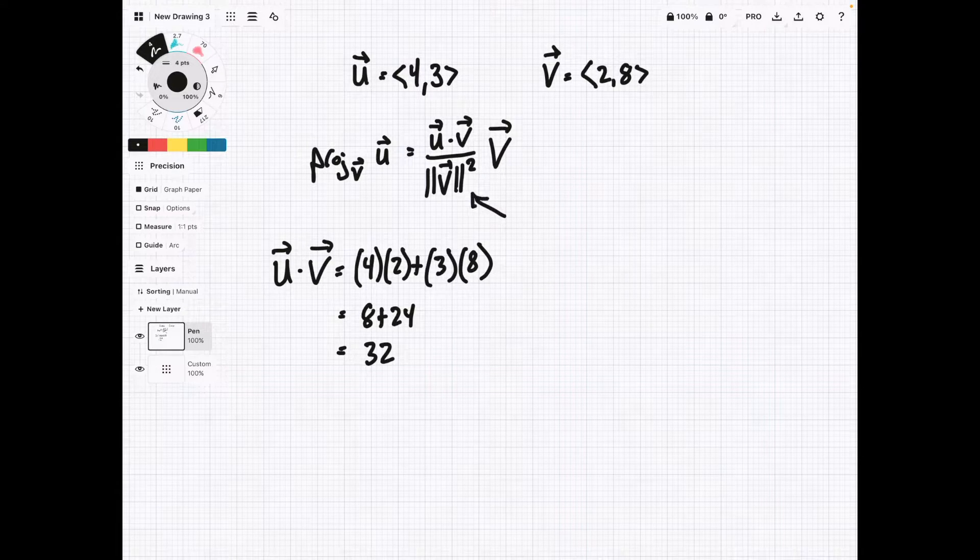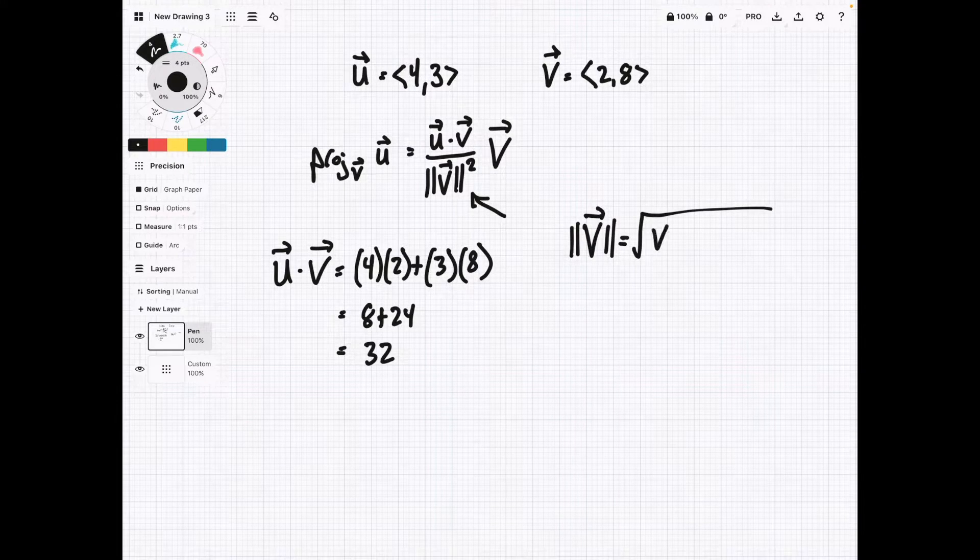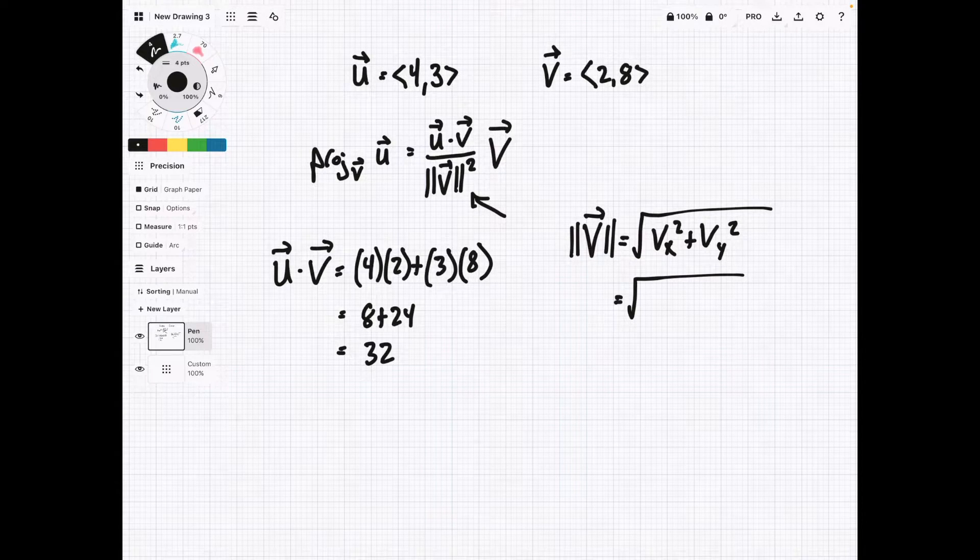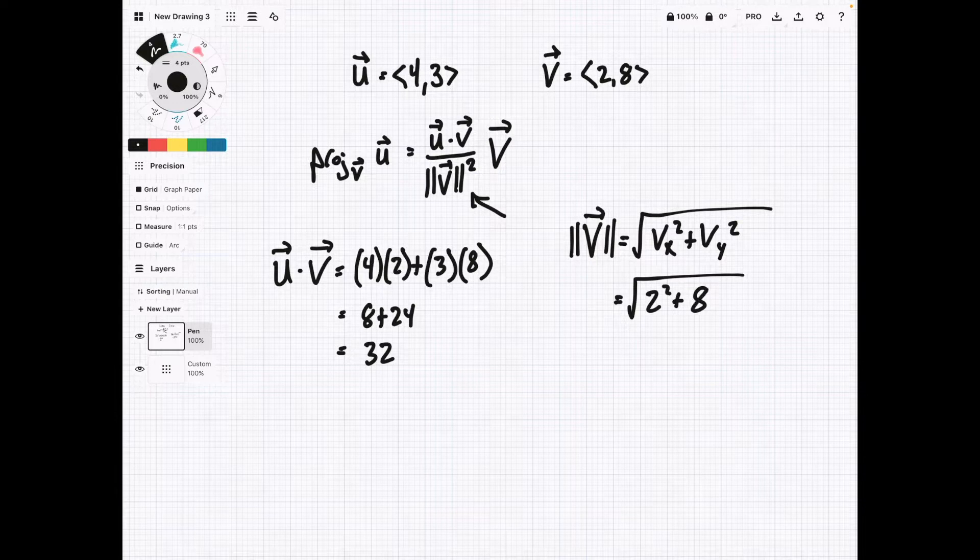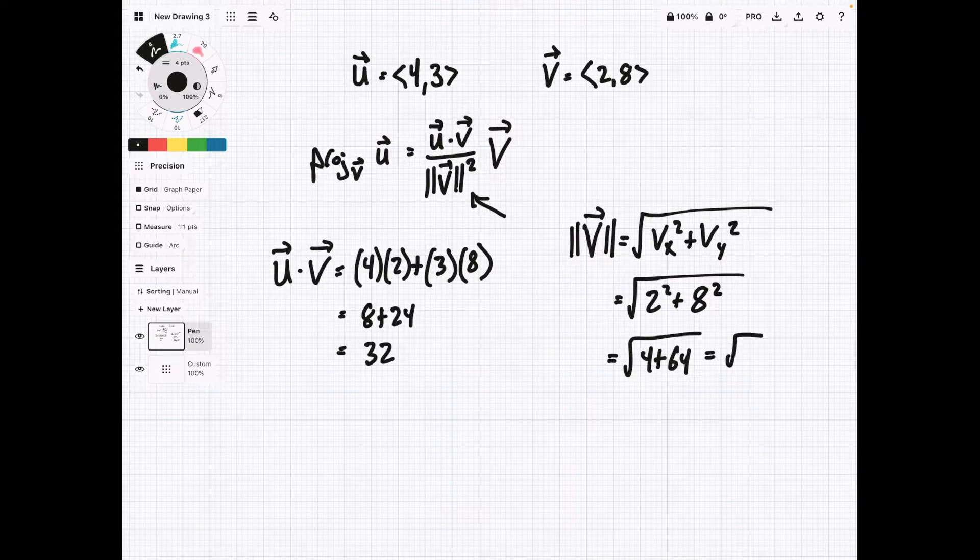And now we want to find the denominator here, so that's the magnitude of v squared. So let's find the magnitude of v. And this is going to be the square root of vx squared plus vy squared. So for v, we have 2 squared plus 8 squared. So this equals the square root of 4 plus 64, which is the square root of 68. So now we can start plugging everything into the formula here.